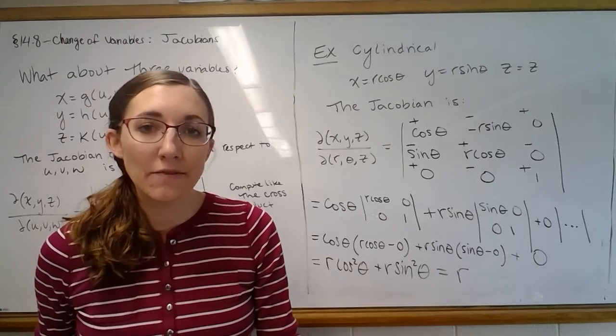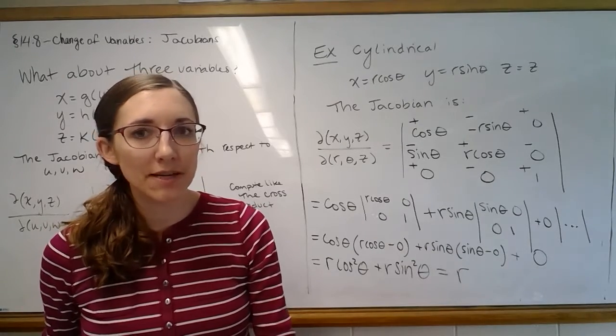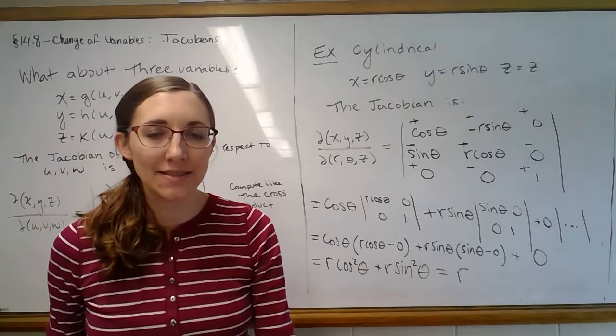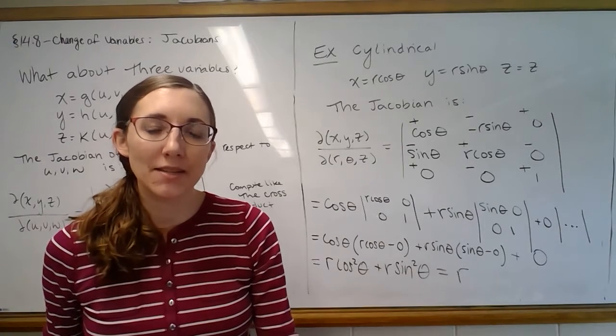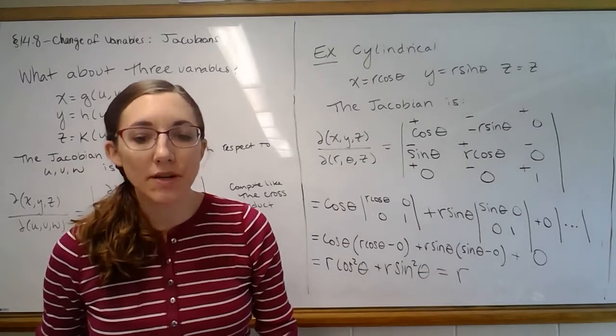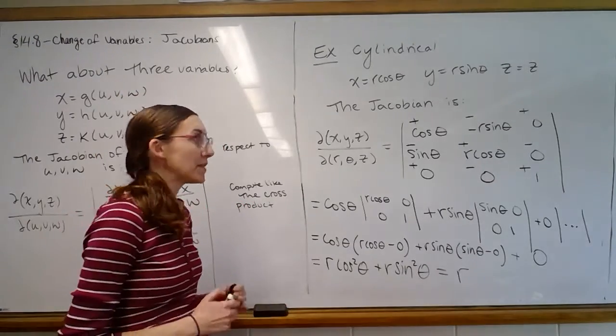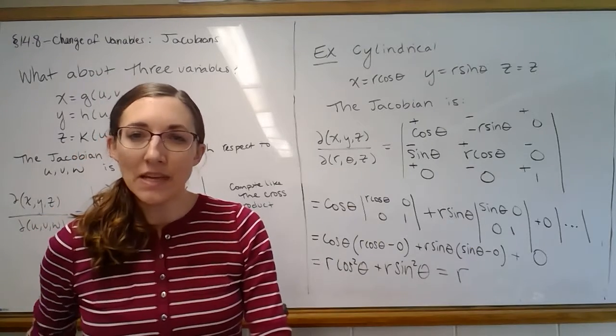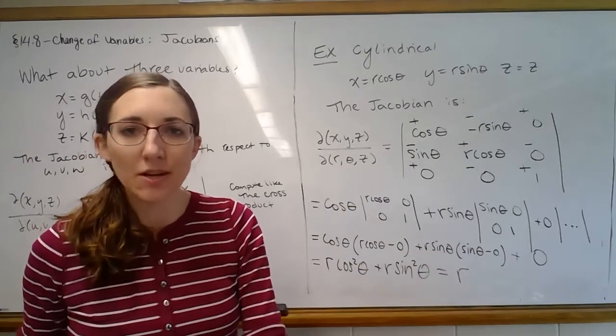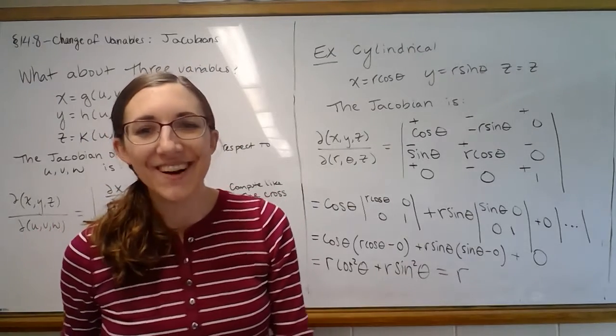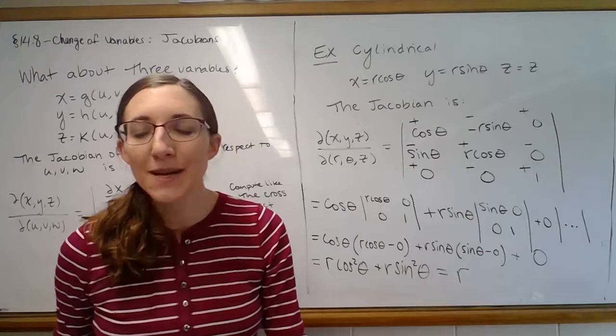So this is what you do with three variables. You're probably wondering, how about spherical coordinates? So you guys will get a chance to prove the Jacobian for spherical coordinates is - let's see if I can remember - it's like rho squared sine phi, if I'm correct. You can look it up and make sure that I'm correct. But you're going to do that one on your homework. So I don't want to steal the fun from you.